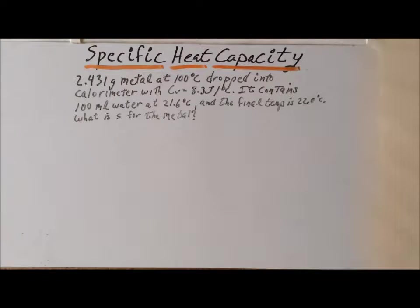and they are dropped into a calorimeter. The calorimeter has a heat capacity of 8.3 joules per degree centigrade. It also contains 100 milliliters of water at 21.6 degrees centigrade. The final temperature of the system ends up being 22.0 degrees centigrade.